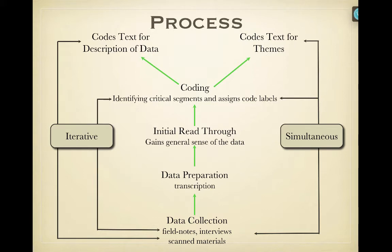Then you describe that data in various kinds of ways, and then you start beginning to develop themes. We call this an iterative process because you keep going through it over and over again. If you can imagine the left-hand side being a counterclockwise circle — data collection, prepare, read, code — you go ahead and describe the data, and then you go through it again and again. You may add more interviews, more coding, and so on. Simultaneously, on the right-hand side, you are cycling through developing themes.